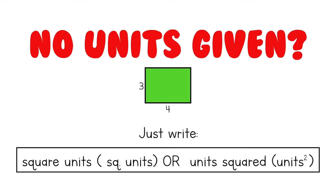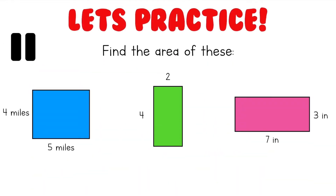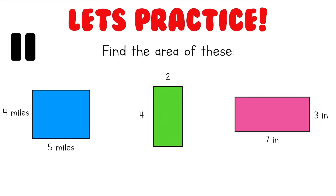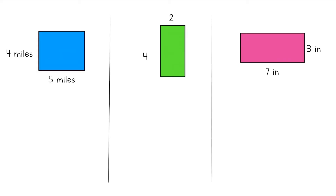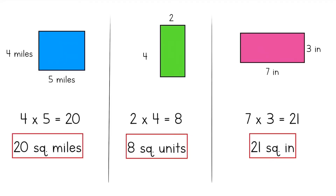Now that you know everything you need to know to find the area of a rectangle, let's try a few on your own. Find the area of these three rectangles. Don't forget to pause before I reveal my answers. Here are the answers I got. I multiplied the length and the width together — so for the blue rectangle, I did 4 times 5, which was 20. Then I labeled my answers using the proper square units. Since the blue rectangle was given to me in miles, my answer was in square miles. I used the same method for all the other rectangles. Did you get a few of these answers correct?